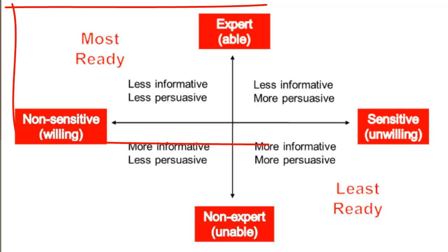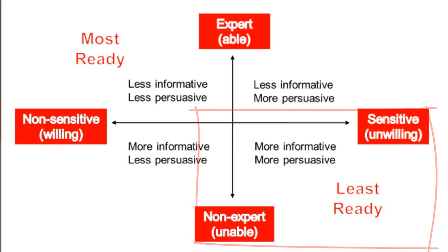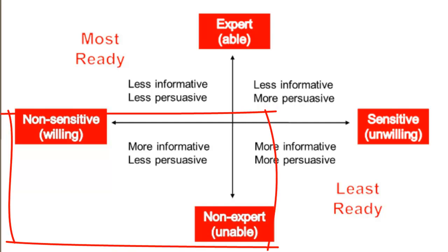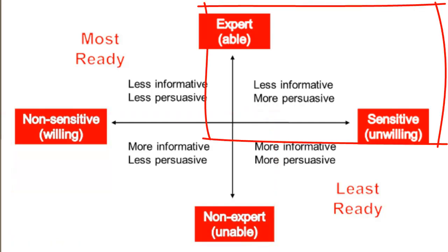An audience who is both able and willing — like a teacher — is the most ready to accept a message and the easiest to address. In contrast, an audience who is unable because they're non-experts, and unwilling because they're sensitive, is the least ready and requires documents with both informative and persuasive content. An audience that is unable but willing makes informative content especially important, while an audience that is able but not willing makes persuasive content most important to overcome their lack of readiness.